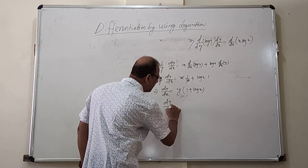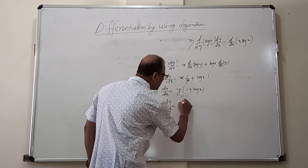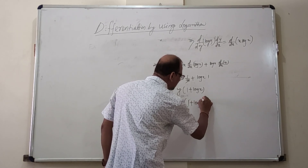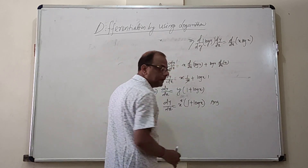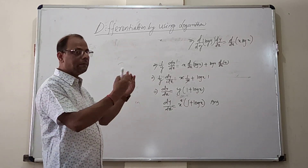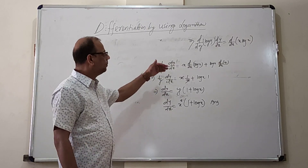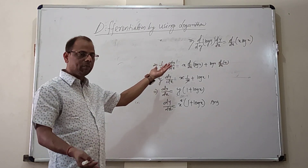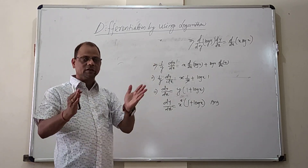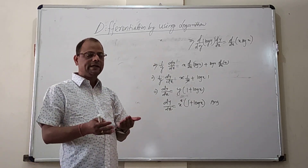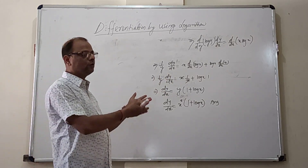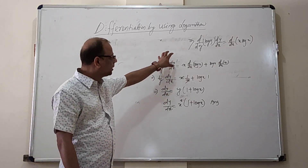Substituting back y equals x to the power x, we get dy/dx equals x^x times (1 plus log x). This is the answer. When the function is variable-to-the-power-variable, taking log on both sides converts it to a simpler form, making the derivative easier to find.